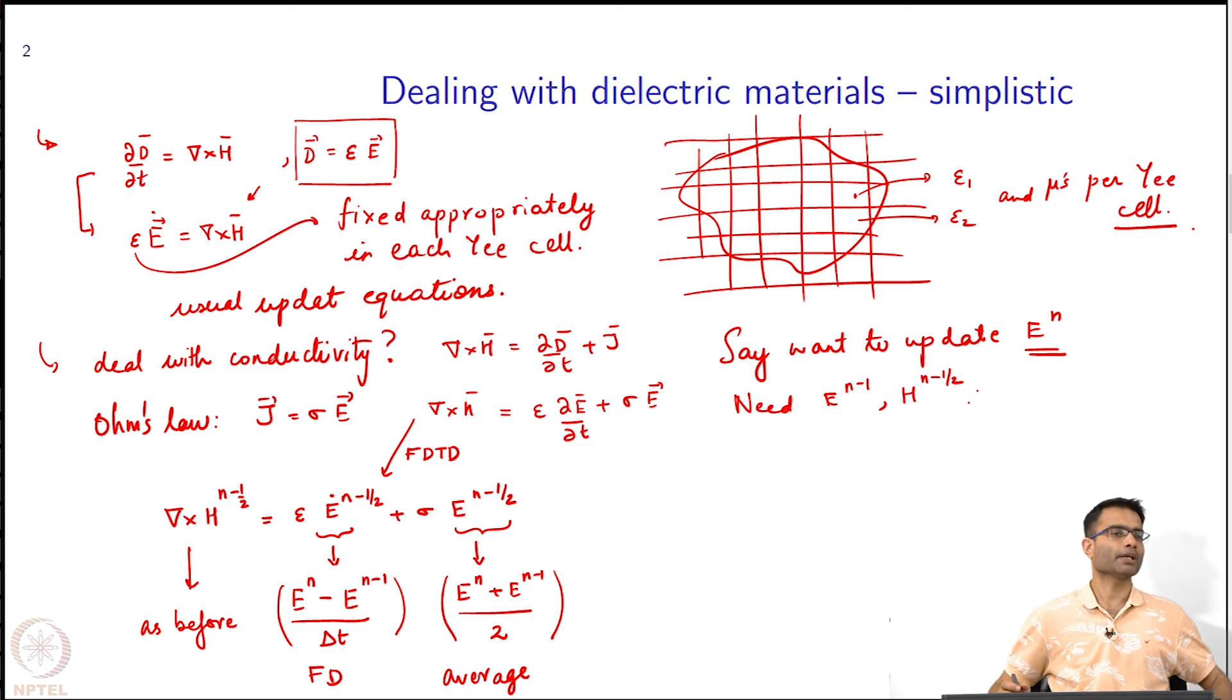I can do my update equations are slightly modified from before just because a sigma term has come in over here. That is just some small thing to keep in mind. This is your simplistic way of dealing with dielectric materials. Questions?